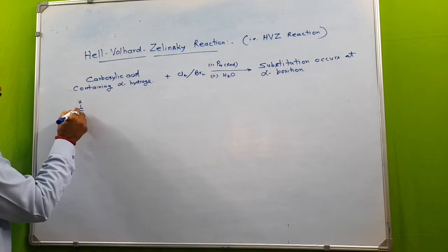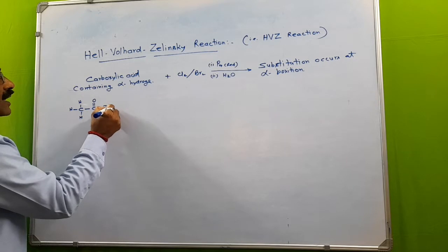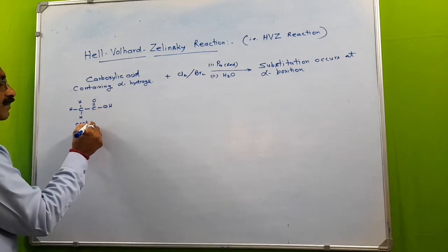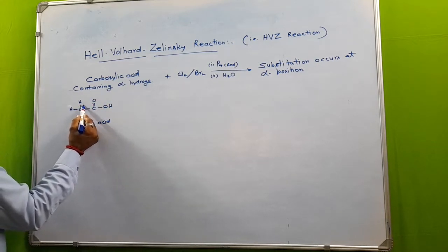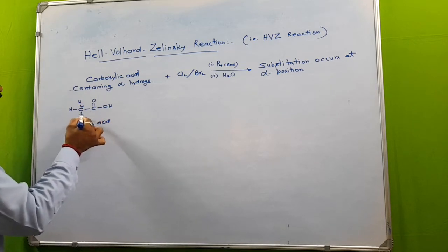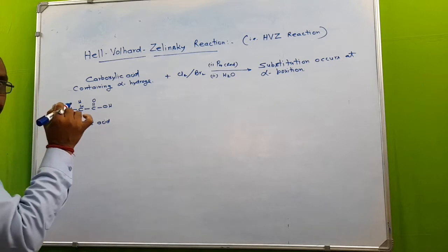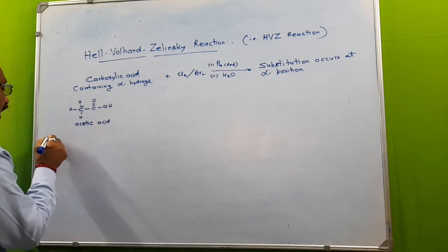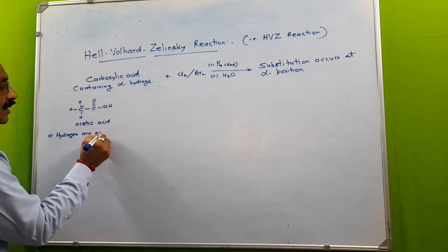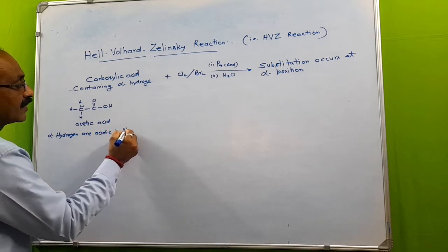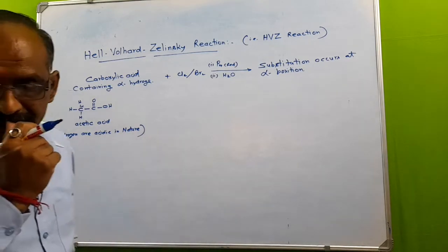Suppose our carboxylic acid is ethanoic acid, or acetic acid. The carbon adjacent to the functional group is known as the alpha-carbon, and the hydrogens present on the alpha-carbon are the alpha-hydrogen atoms. Remember that these alpha-hydrogens are acidic in nature.